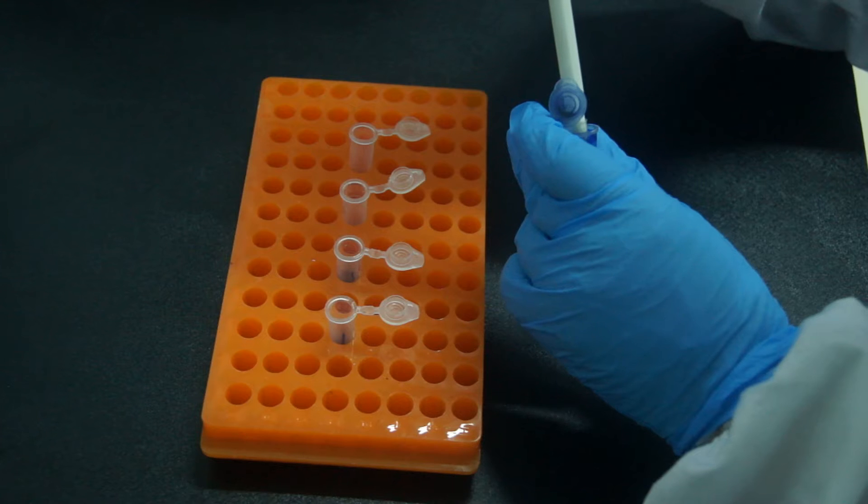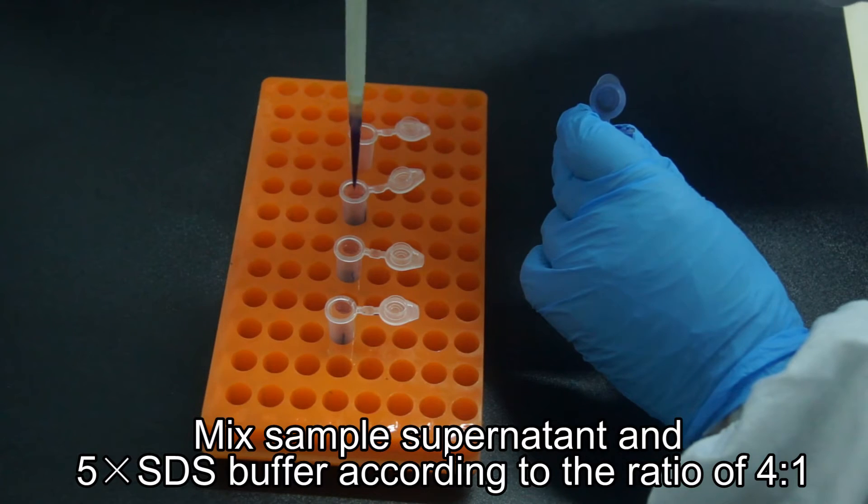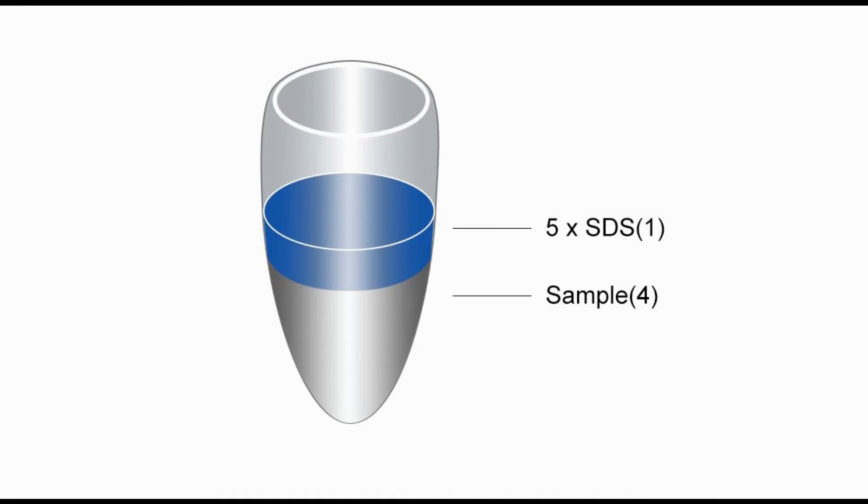Sample denaturation: Dilute the sample supernatant with 5 times SDS buffer at the ratio of 4 to 1. The best loading sample volume is 10 microliters. Ensure that the loading volume is similar among the samples. The sample should be diluted with PBS if the concentration is too high.